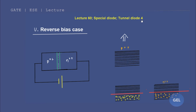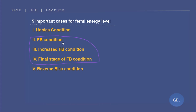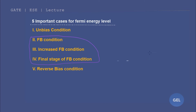This is the fourth video lecture of tunnel diode. In the previous third video lecture of tunnel diode, we understood the forward bias case — the initial forward bias condition, increased forward bias condition, and the final stage of forward bias condition. We also analyzed the graph and understood the negative resistance region.